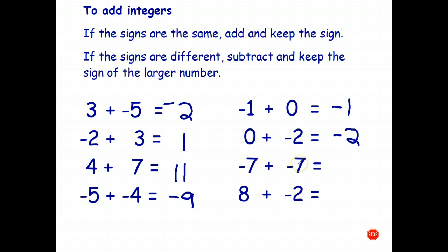Here I'm adding two numbers with the same sign, so negative 7 plus negative 7 is negative 14. Here the signs are different: 8 minus 2 is 6, and because the 8 is positive, the answer is positive 6.